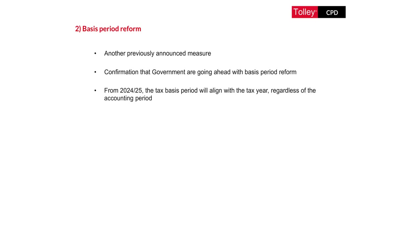This would apply from the 2024/25 tax year. One of the major criticisms of this proposal is that that is the date from which Making Tax Digital for income tax purposes will be effective. Commentators felt that this was a lot to change at the same time. Both of those measures have actually been delayed by a year but they're still happening at the same time, so from 2024/25 you simply take the profits arising in the tax year regardless of what your accounting period is.